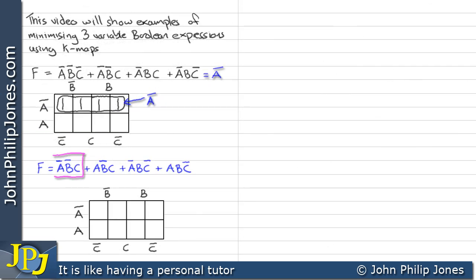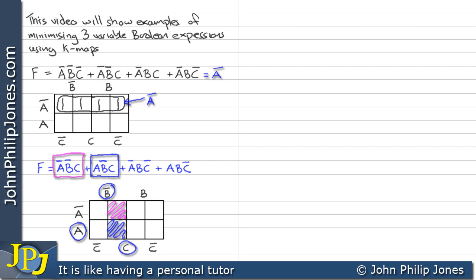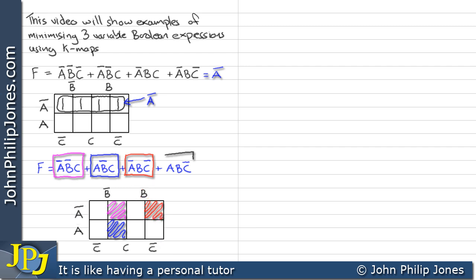Let's have a look at this example. We start with this minterm: not A, not B, C — that corresponds to this area. The next minterm is A, not B, C — which is this area. The next minterm corresponds to not A, not B, not C — which is this area. And this one is A, not B, not C — which is this area here.